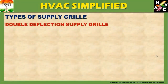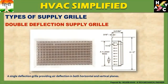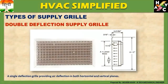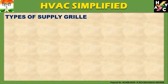Double Deflection Supply Grill: यहां पर आप देख सकते हैं कि A Double Deflection Supply Grill provides a Deflection on both Horizontal और Vertical planes। यहां पर दो deflections होती हैं — एक Vertical और एक Horizontal। तो यहां पर आप Vertical और Horizontal दोनों directions में Double Deflection कर सकते हैं।